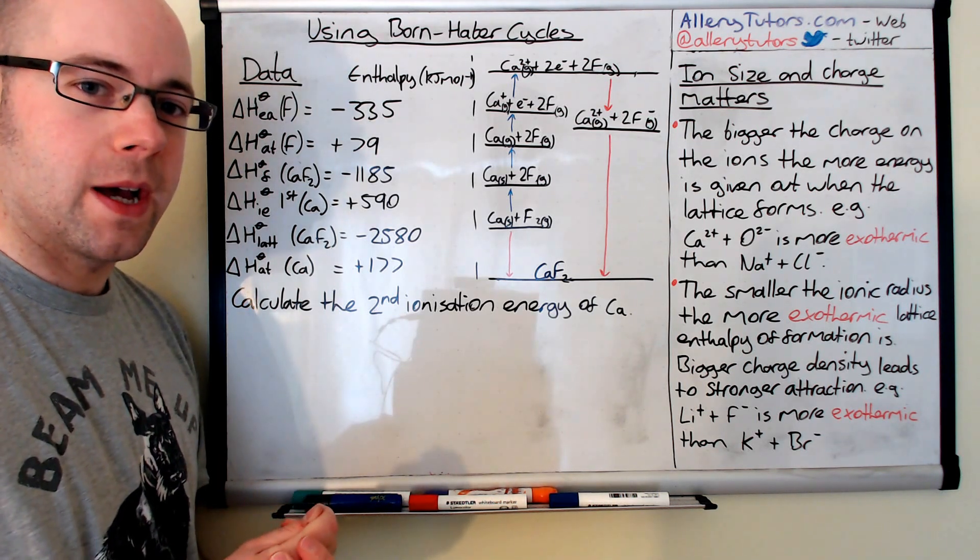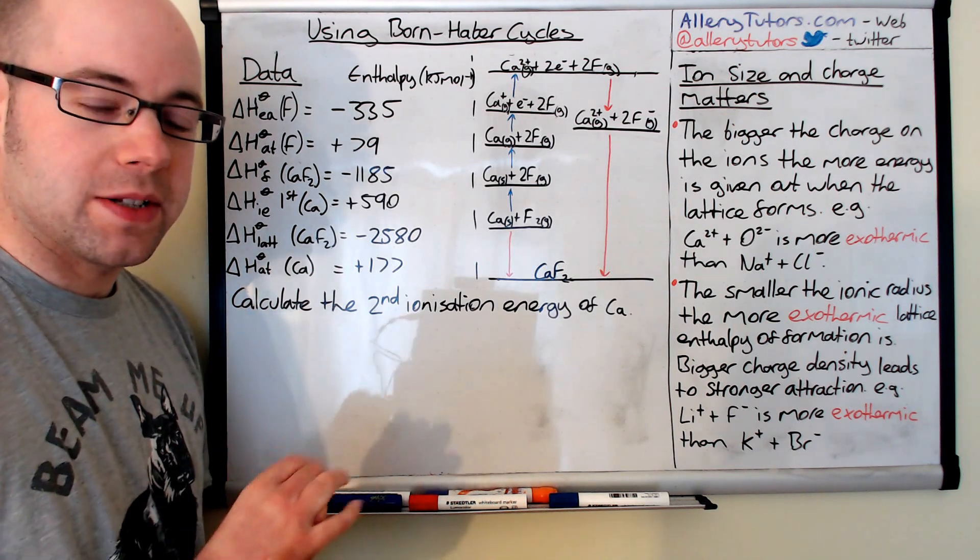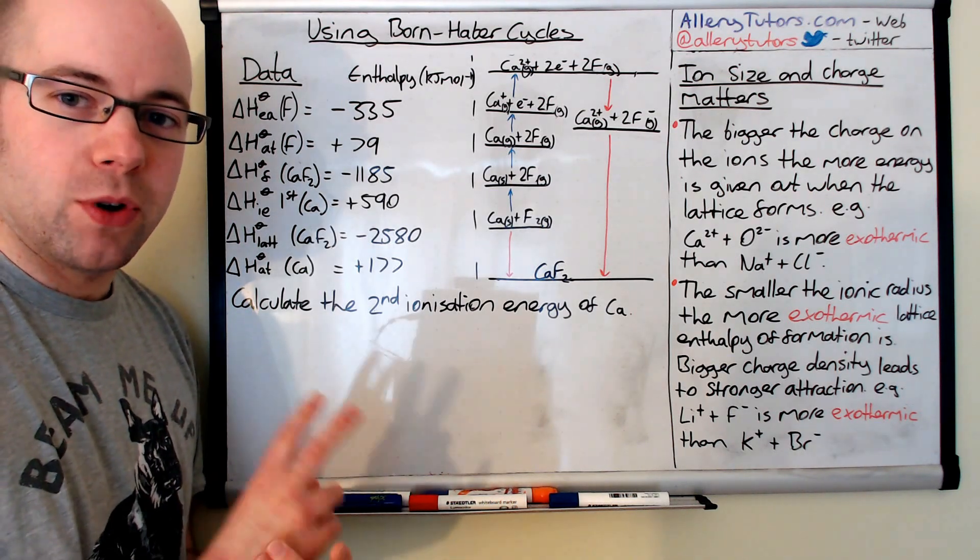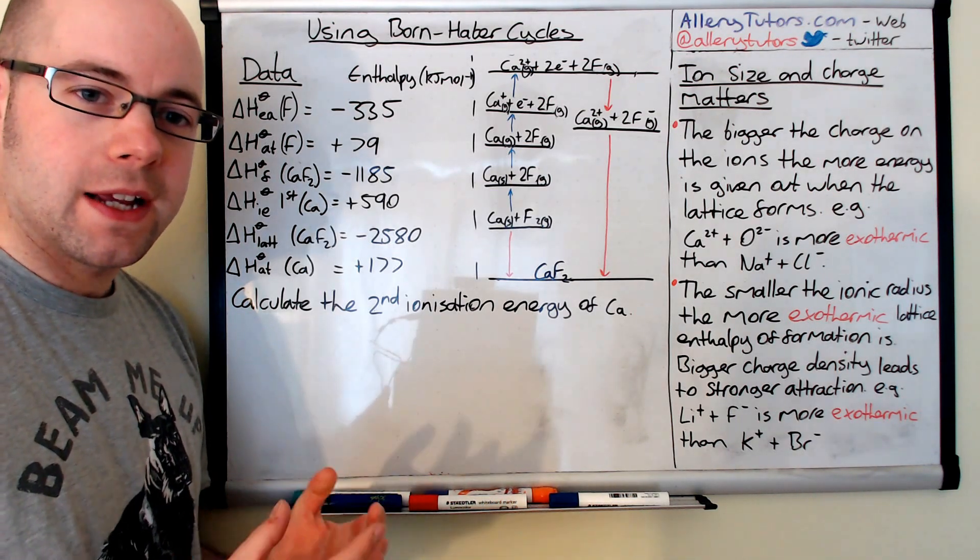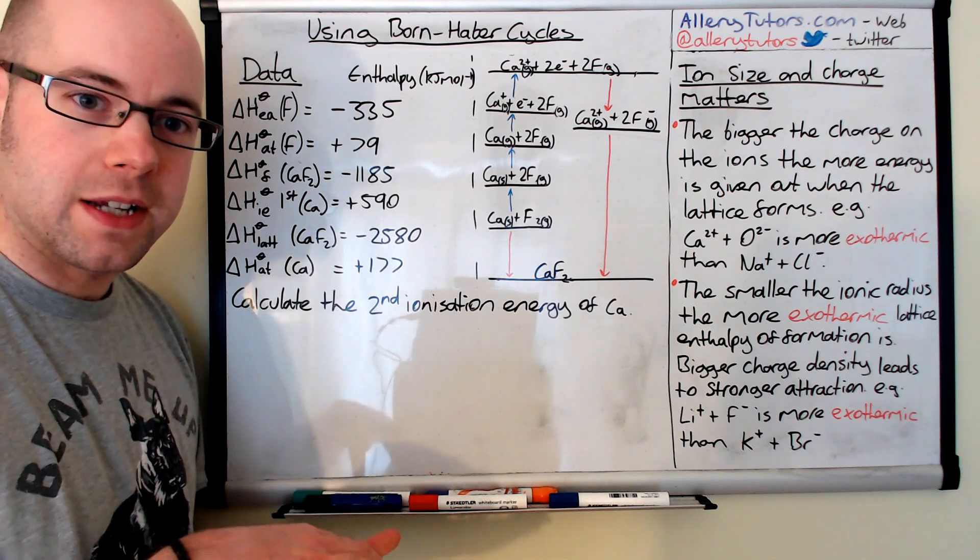I'm going to show just a few potential pitfalls that you should avoid as well. I've picked an example where there could be quite a few of them so I've done that deliberately. I'm also going to look at the ion size and charge and what effect that has on the lattice enthalpy of formation.